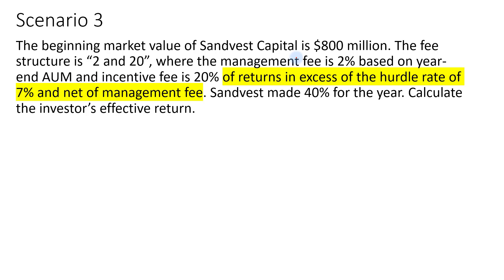For scenario three, same details as scenarios one and two, but the incentive fee is 20% of returns in excess of a hurdle rate of 7%, net of management fee. The 7% is based on the market value at the beginning of the year — $800 million. So $800 million multiplied by 7% gives us $56 million. This is the hurdle the fund must achieve before incentive fees can be paid. This is a case of a hard hurdle rate.